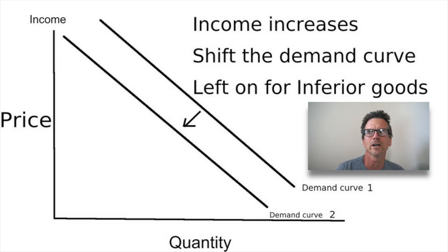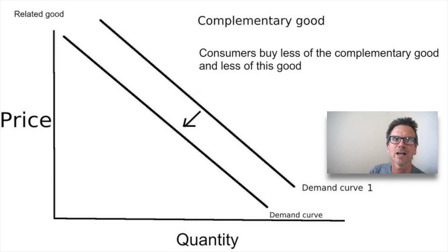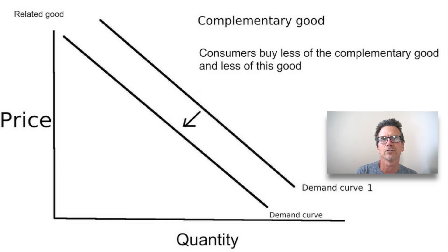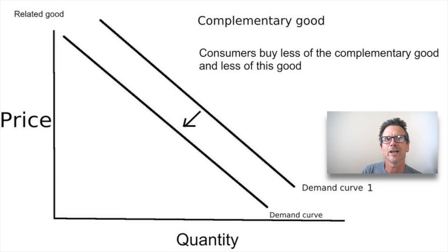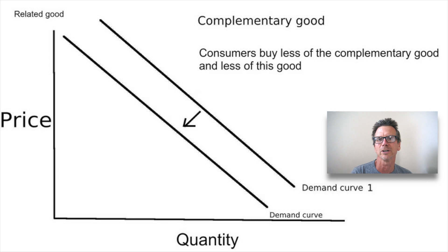A complementary good example is hamburgers and ketchup. If the price of hamburgers skyrockets and the price of ketchup stays the same, you're going to experience a decrease in the demand for ketchup — even though the price of ketchup is unchanged, ceteris paribus. These two goods just go together; they're complements.